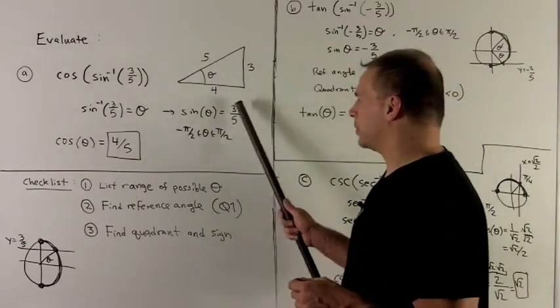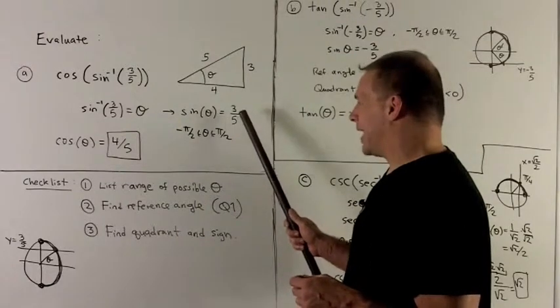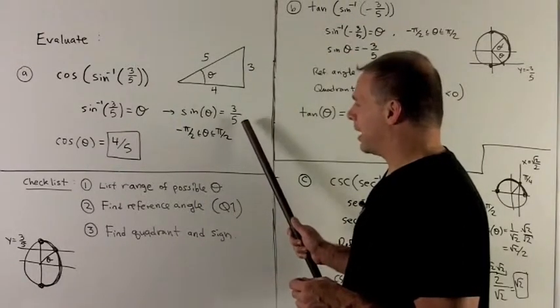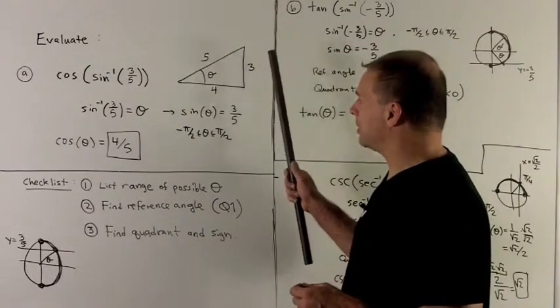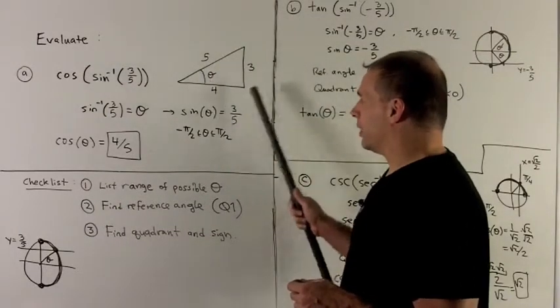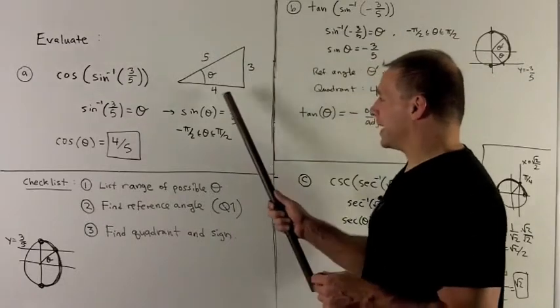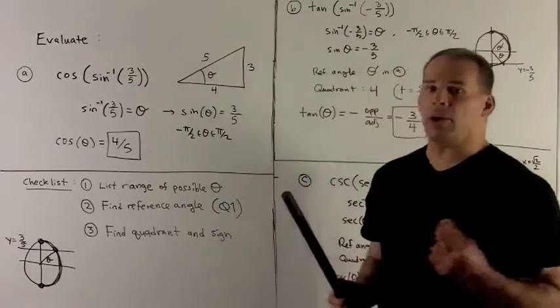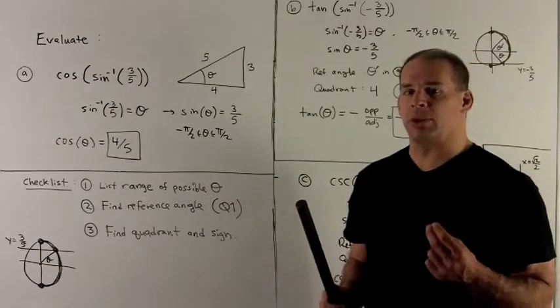So in this case, if I have sine of theta equals three-fifths, then that's going to be opposite over hypotenuse. I can put in an opposite, a hypotenuse. And then using the Pythagorean theorem, we have a three-four-five triangle, so that has to be a four here. I don't know the angle yet, but this will still be useful.